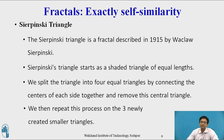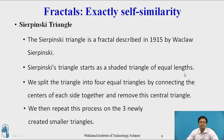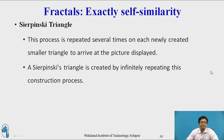Sierpinski triangle is a fractal described in 1915 by Sierpinski. It starts as a shaded triangle of equal length, and we split the triangle into four equal triangles by connecting the centre of each side together and remove the central triangle. We can then repeat this process on the three newly created smaller triangles. This process is repeated several times to arrive at the final picture, and the Sierpinski triangle is created by infinitely repeating this construction process.